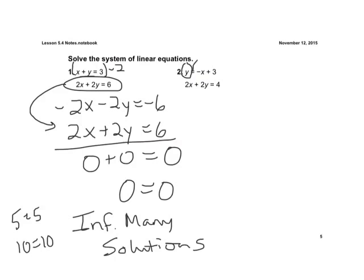Let's use substitution. So let's take our negative x plus 3 and plug it right in for y. So we have 2x. We're rewriting the second equation. 2 times y, which is negative x plus 3, equals 4.